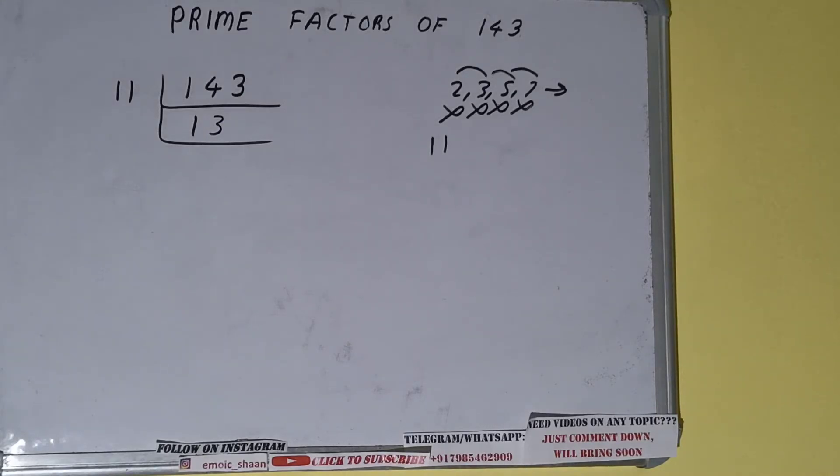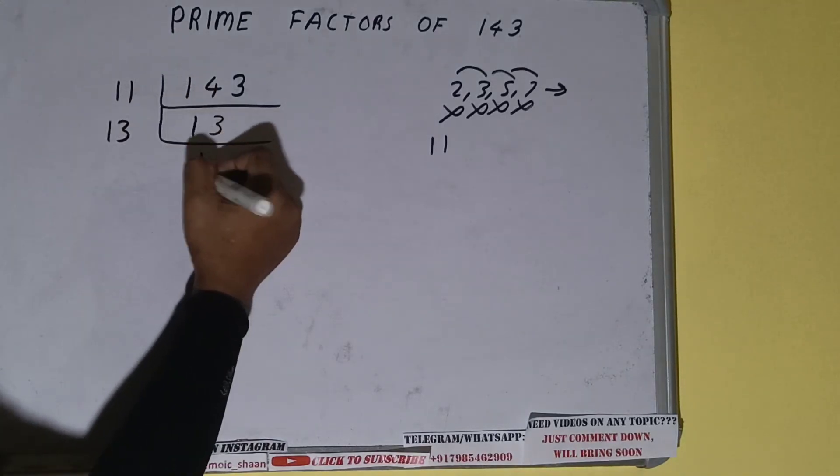Is 13 further divisible by 11? The answer is no, because 13 is itself a prime number. So 13 is only divisible by itself, that is 13. And once we do so, we'll be getting 1.